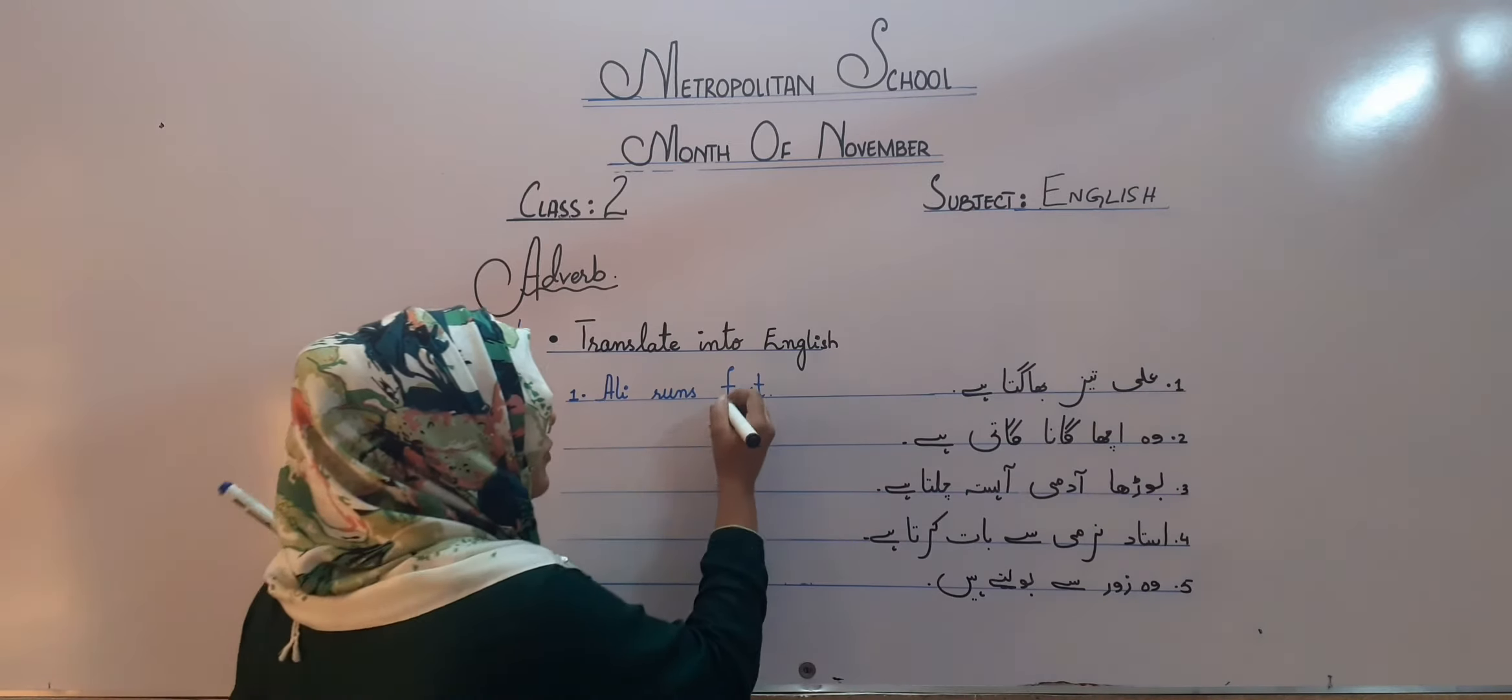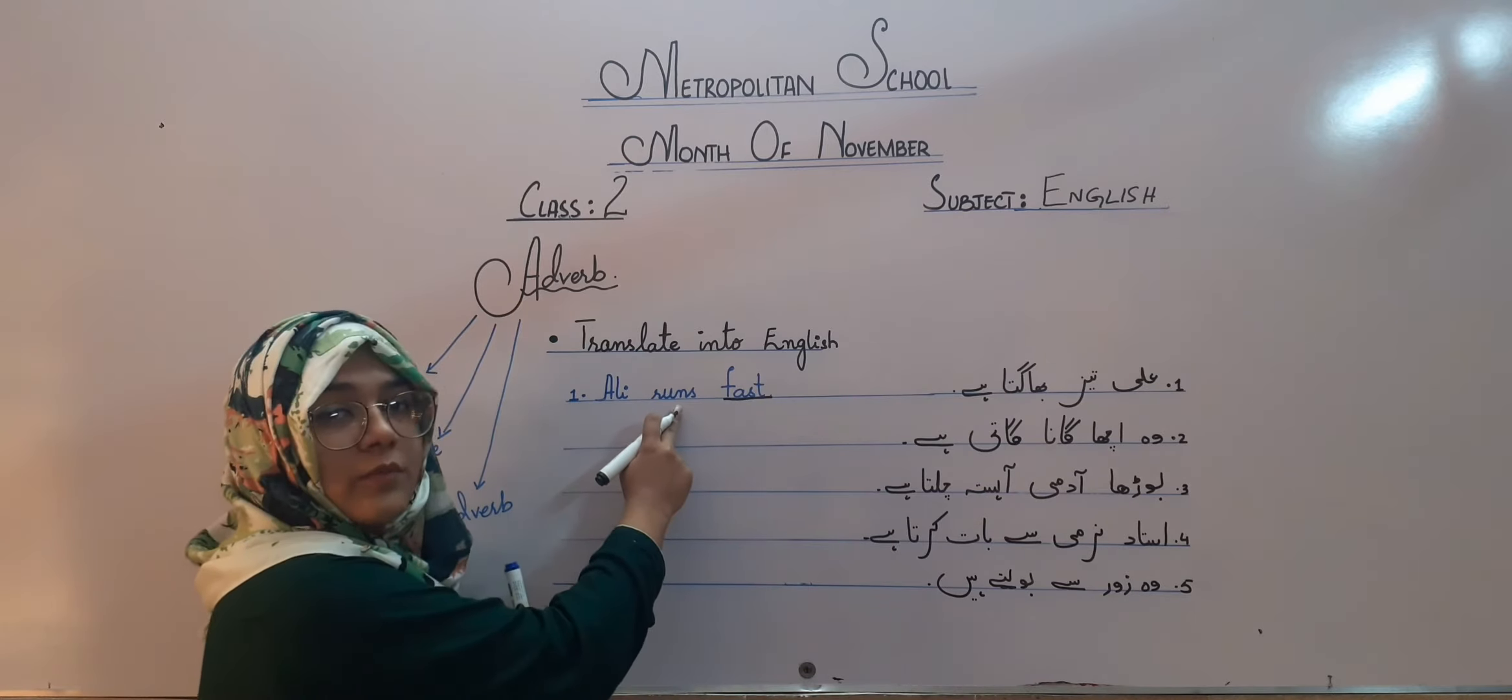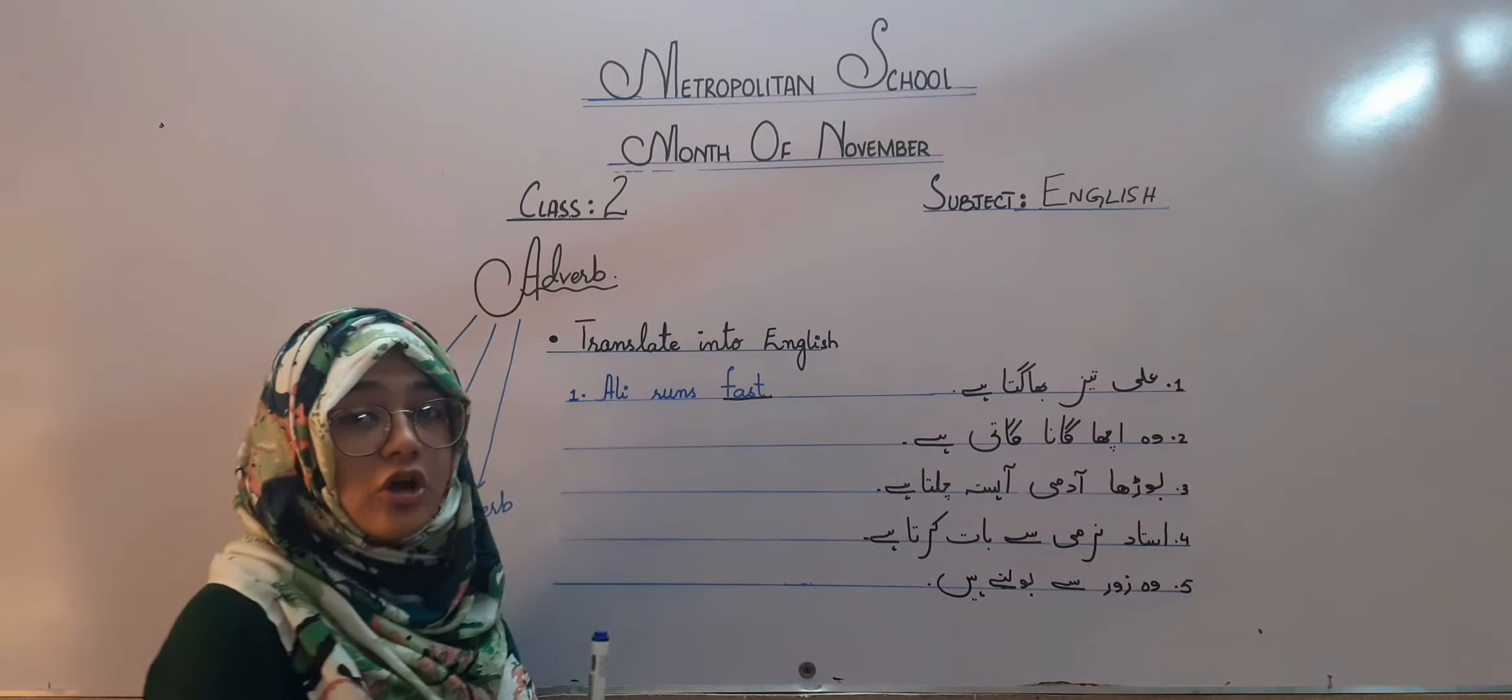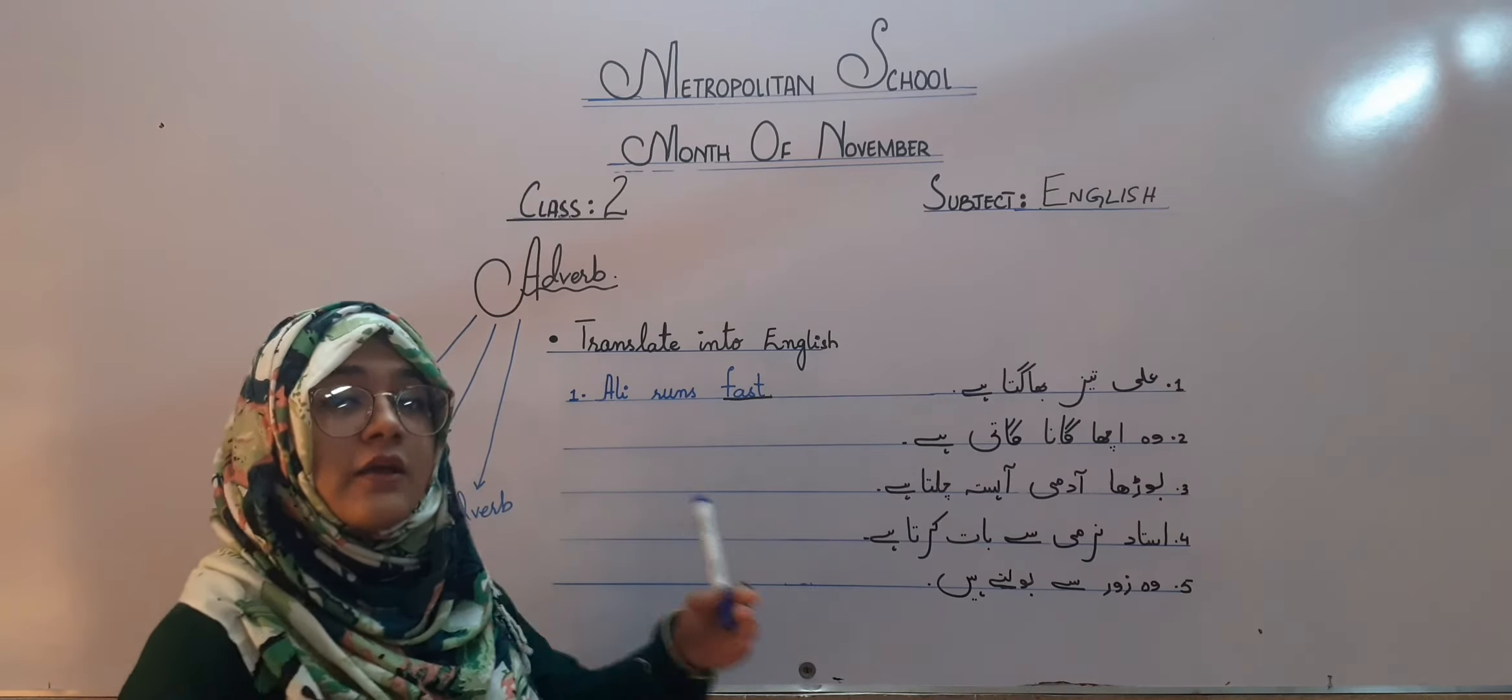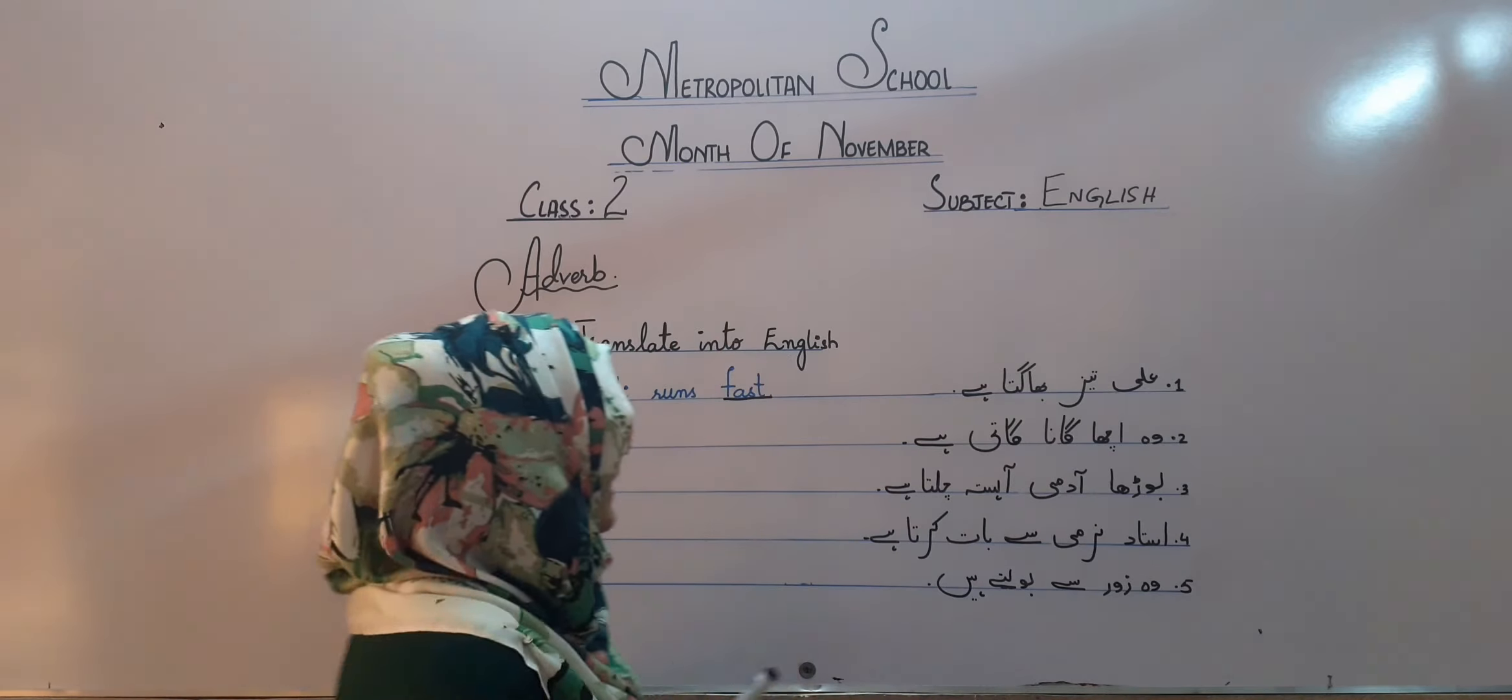Ali tez bhaagta hai. Ali runs fast. Here, this fast is modifying the work of Ali, the action of Ali which he is doing. He is telling that he is not running slowly, he is running fastly. Second one is wo achcha gaana gaati hai. She, what is the action word over here? What is the word? Sings nicely.